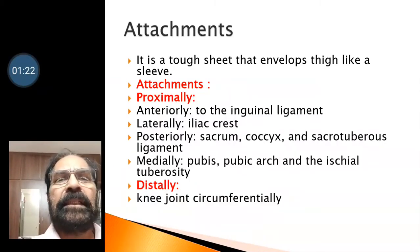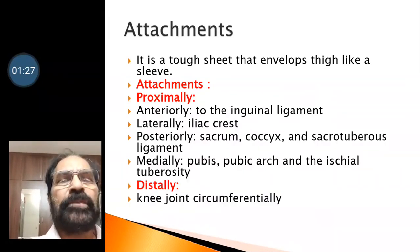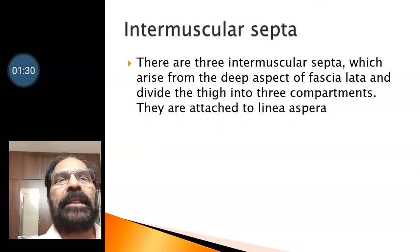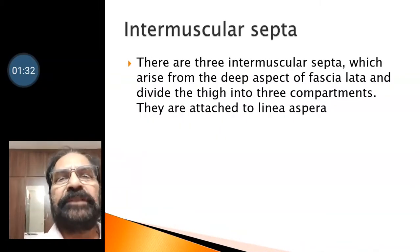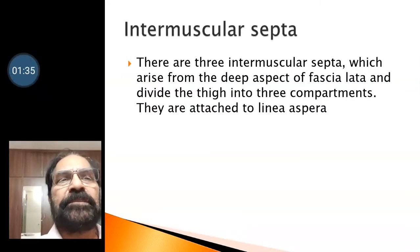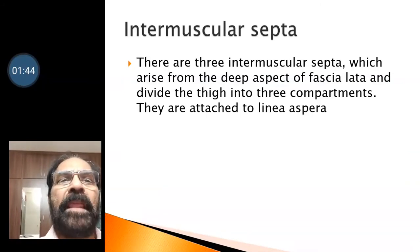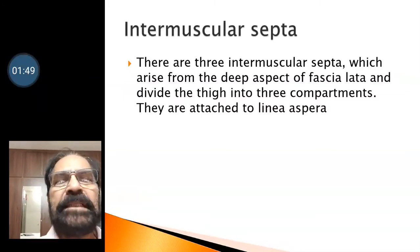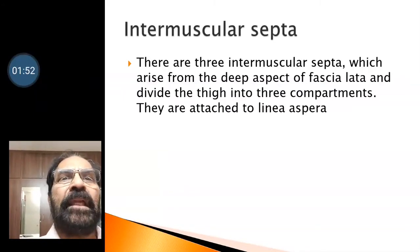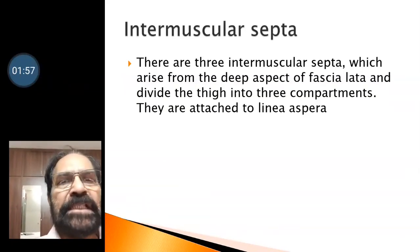Distally, the fascia lata is attached around the knee joint to the bony prominences. The fascia lata gives three intramuscular septa which arise on its deeper aspects. These intramuscular septa divide the thigh into three compartments: anterior, medial, and posterior compartments. These intramuscular septa are attached to the linea aspera.